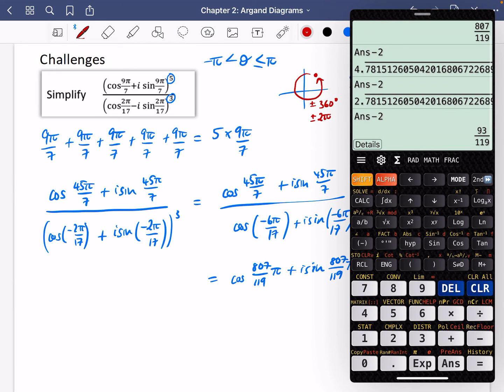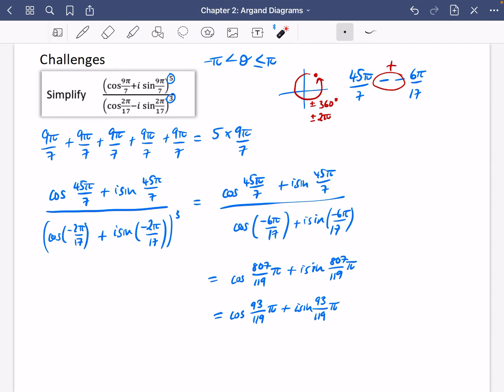We've now got, as a fraction, it's 93 over 119. So we've got the argument in its correct range. So we're going to have the cos of 93 over 119 pi plus i sine of 93 over 119 pi. So we've taken something that already looks pretty abstract, and we've been able to simplify it. I don't know how useful this particular skill is, but we're going to delve into this a lot more deeply in year two complex numbers.